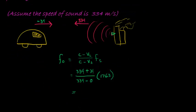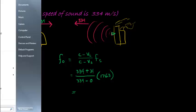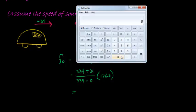And what do we get? Well, using our calculator we get 334 plus 34, 368 that is our numerator.